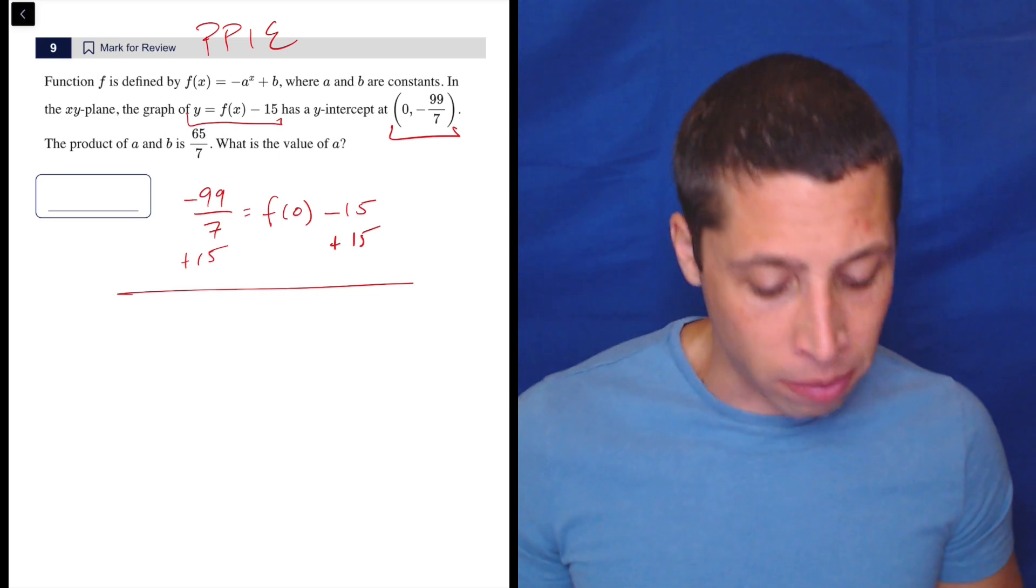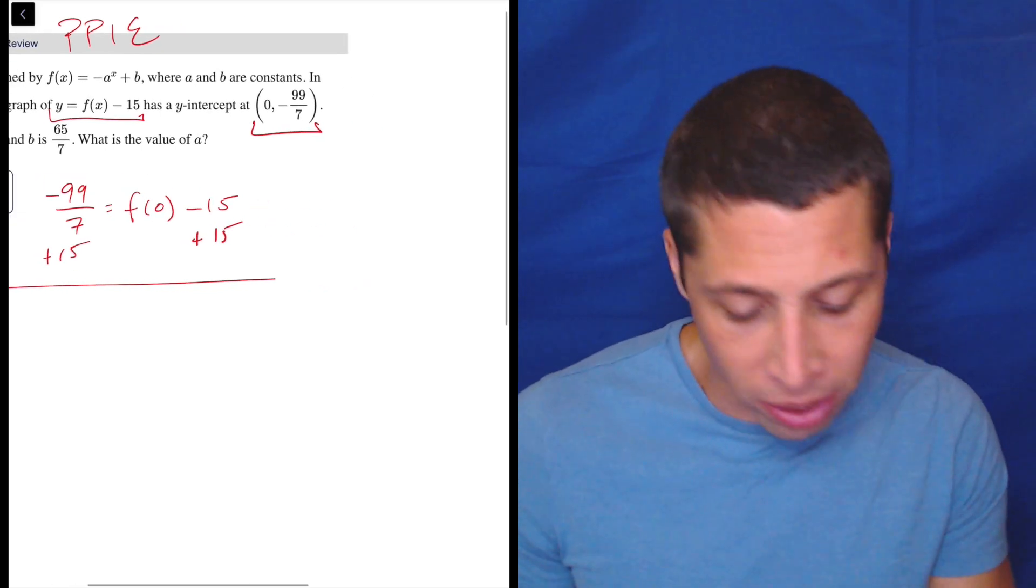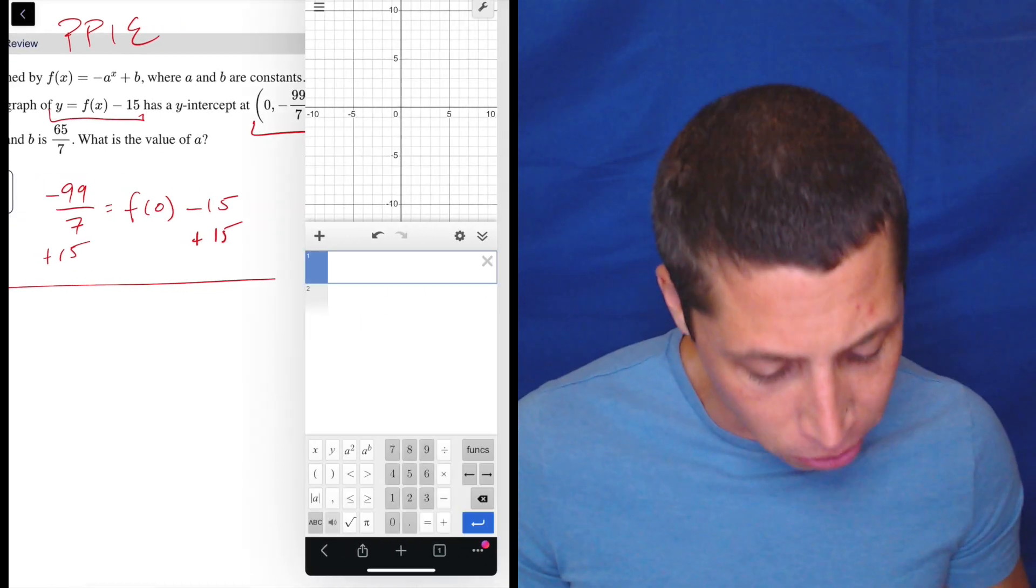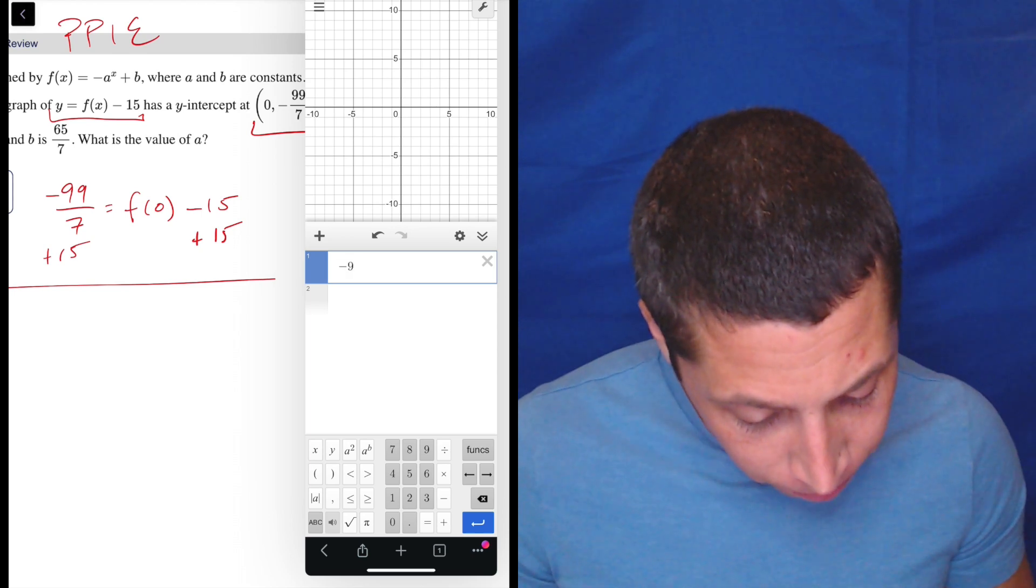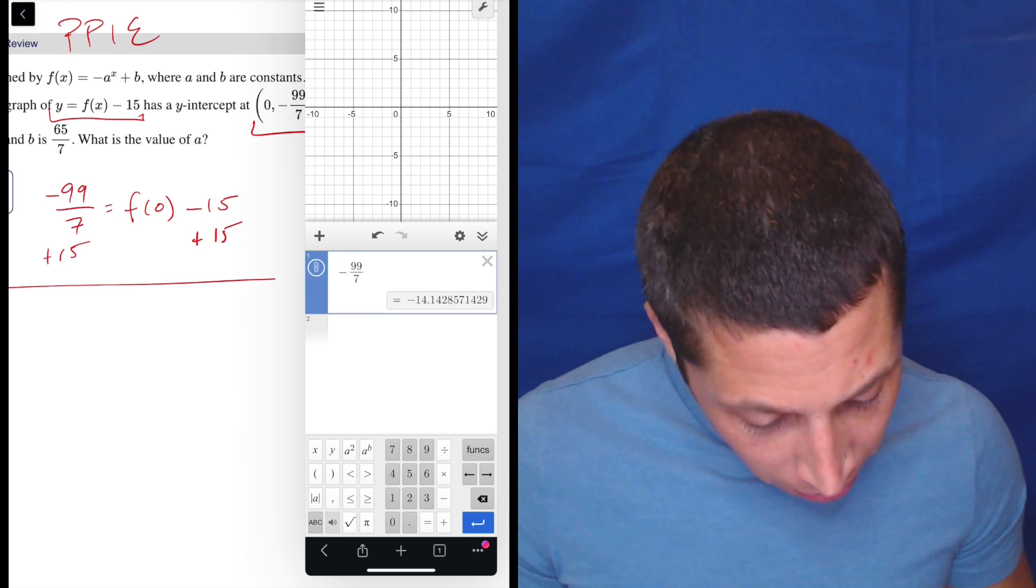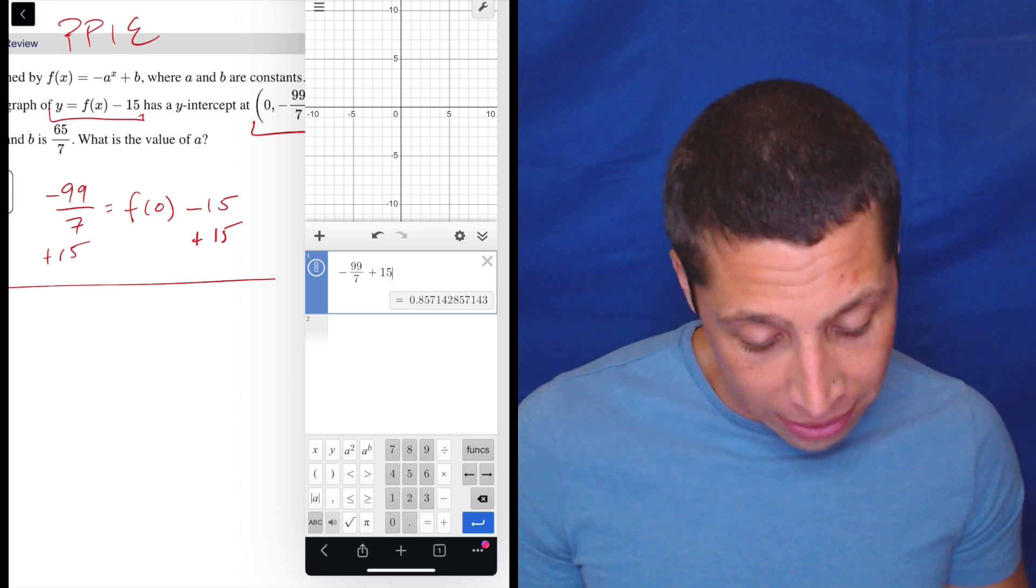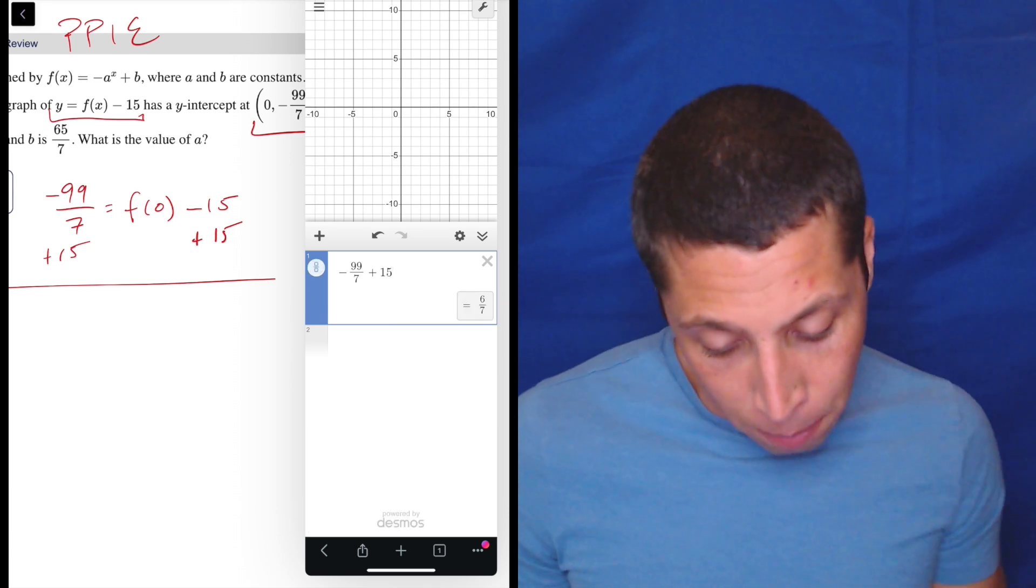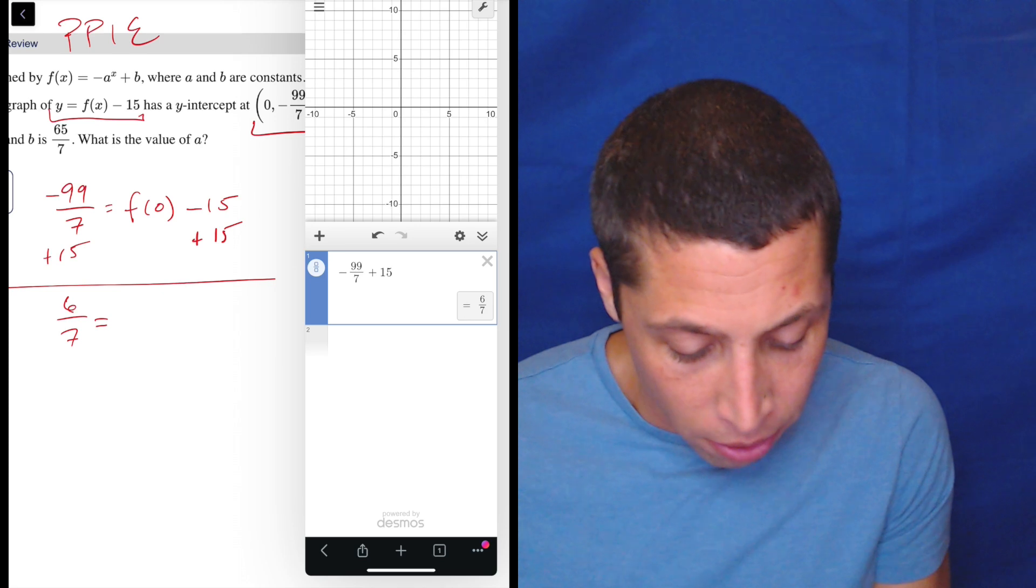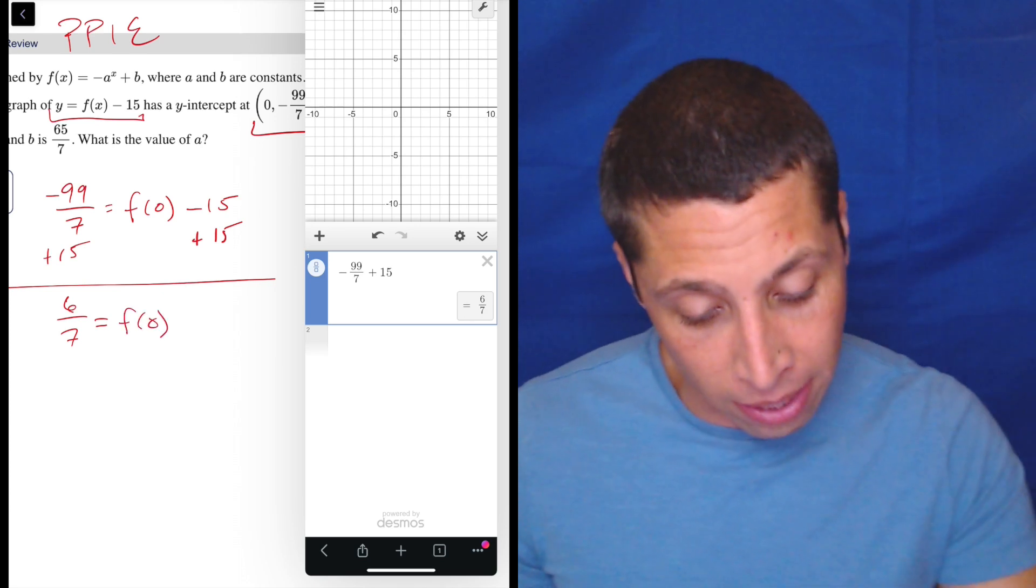And this is where I'm going to start my Desmos assist. I don't want to deal with the fractions and that's sevenths, so why bother? So how about negative 99 divided by 7 plus 15, which is this messy number. But if I hit the fraction button, it becomes the much nicer 6/7. So F(0) is 6/7.